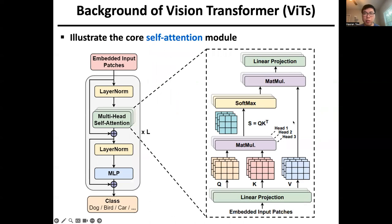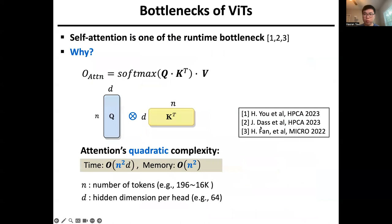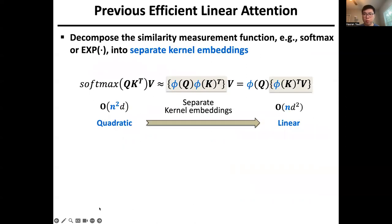The core self-attention is illustrated here. The embedded input tokens will be linearly projected to QKV vectors, namely query, key, and value. Each query will be multiplied with all keys to get one row of the attention map, resulting in attention maps with size equal to the number of tokens. The attention map will be further multiplied with the values to get the final output. However, self-attention is one of the runtime bottlenecks, because it has quadratic complexity with regard to the number of tokens N when multiplying Q and K, and N could be much larger than the hidden dimension D.